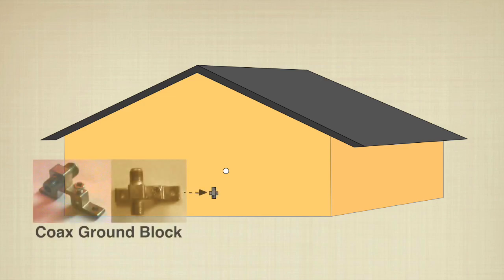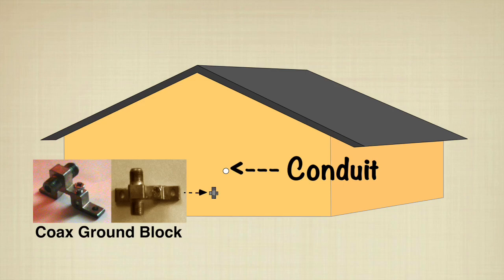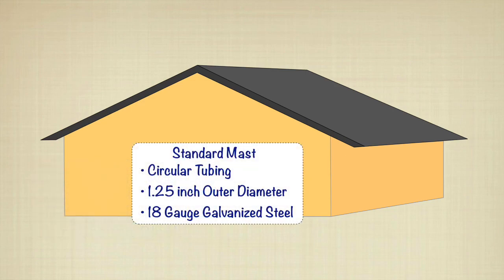Next, mount the coax ground block as close as possible to the conduit. Then decide on a roof or side structure mast mount.